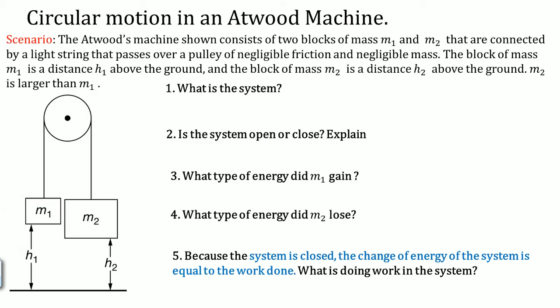The next scenario is circular motion in an Atwood machine. The Atwood machine consists of blocks M1 and M2 connected by a light string that passes over a pulley of negligible friction and negligible mass. Block M1 is a distance H1 above the ground and block M2 is a distance H2 above the ground, and M2 is larger than M1. The system would be M1, M2, and Earth — you must include Earth because there is gravitational potential energy equal to mgh, and you need Earth to get the G value.